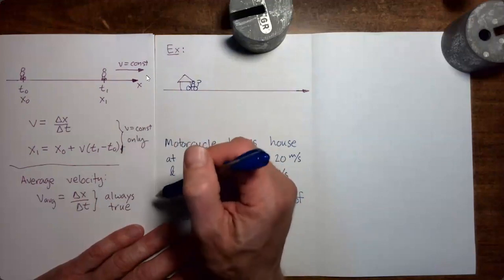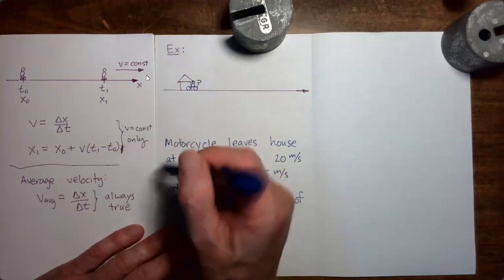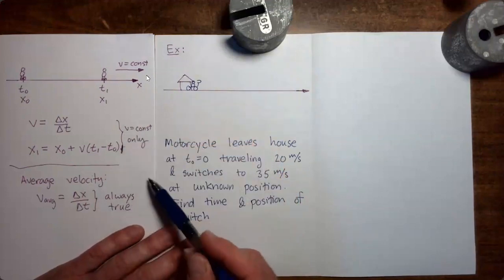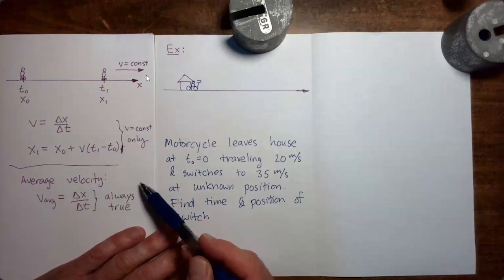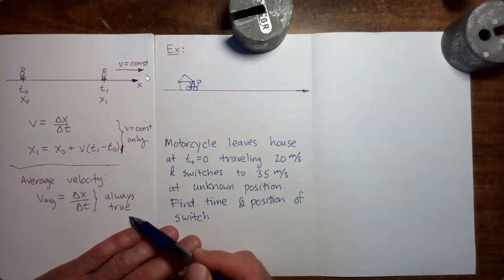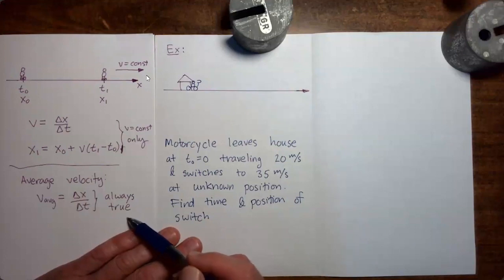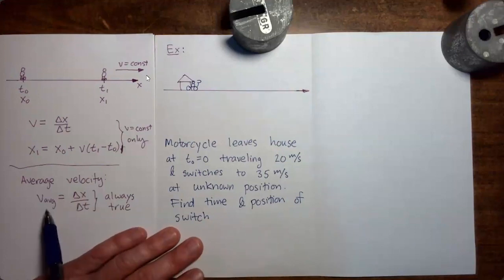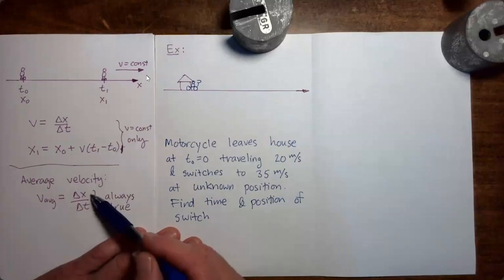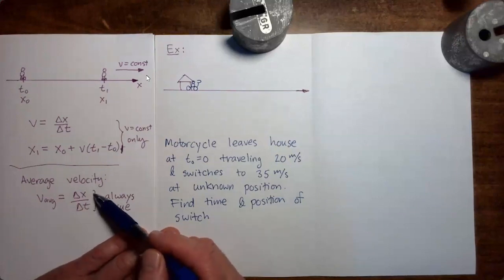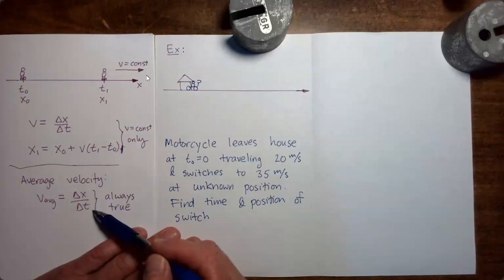Both of those equations you have seen before. Now I'm going to introduce you to a new equation. This equation gives you a way of describing the average velocity between two moments of interest. The average velocity between two moments of interest is the change in position that occurred between those moments of interest divided by the time interval.